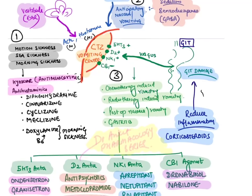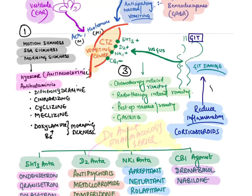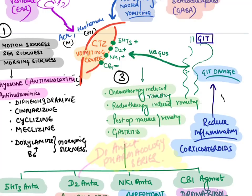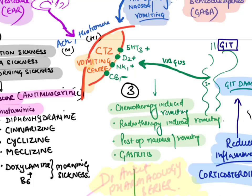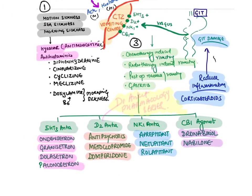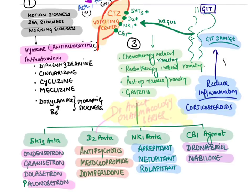The major cause of vomiting is GIT damage — from anti-cancer drugs, radiotherapy, post-operative nausea and vomiting, or gastritis. Inflammation releases mediators through the vagus nerve directly to the CTZ. If serotonin stimulates 5-HT3 receptors, it leads to vomiting — so we give 5-HT3 antagonists: ondansetron, granisetron, dolasetron, palonosetron. If dopamine stimulates D2 receptors, vomiting occurs — so we give D2 antagonists: antipsychotics, metoclopramide, and domperidone. When substance P stimulates NK1 receptors, we give NK1 antagonists: aprepitant, netupitant, and rolapitant (ending with '-pitant'). Cannabinoids suppress vomiting via CB1 receptors.